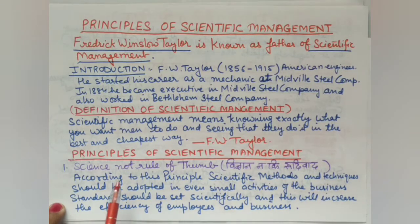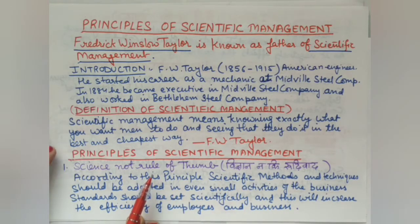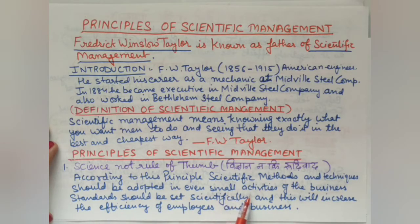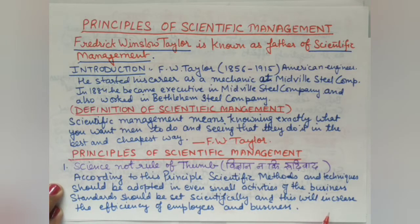The rule of thumb means doing business using traditional guesswork instead of scientific methods. According to this principle, we must study cause-and-effect relationships scientifically before making business decisions. Scientific methods and techniques should be adopted even in small activities of the business, and standards should be set up scientifically.